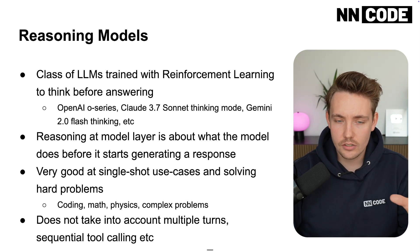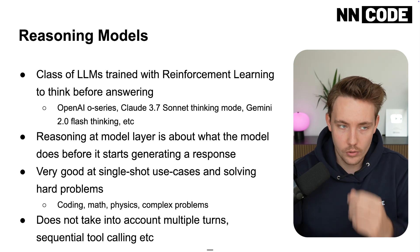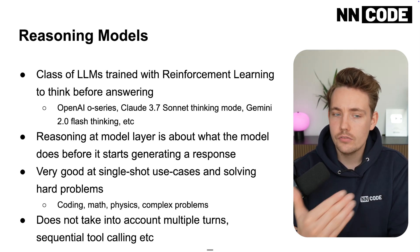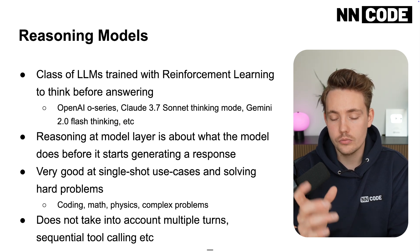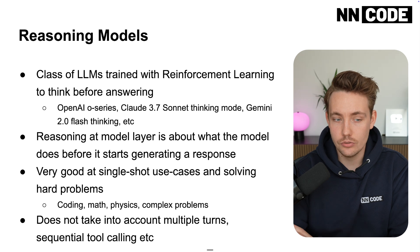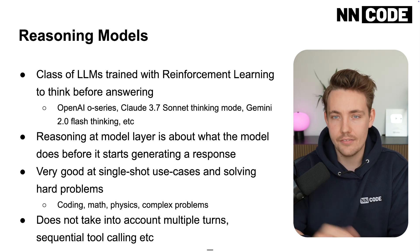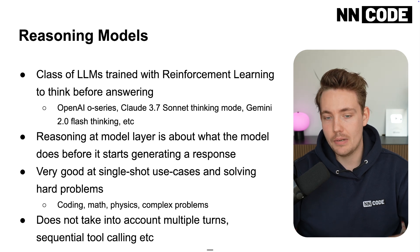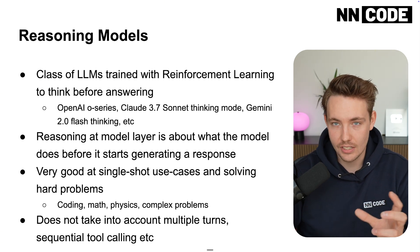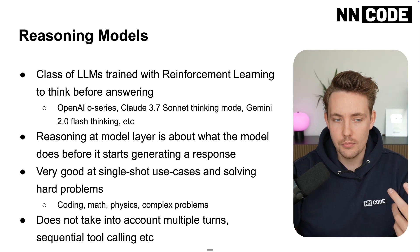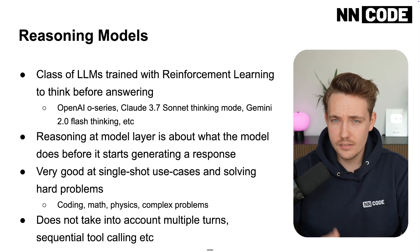There's a difference between a standard call and thinking mode. With thinking mode, we have reasoning at the model level. But not all models support chain of thought or thinking mode natively. So we can implement it on the agent level instead, dividing the task into multiple steps while still using a traditional LLM call. Reasoning at the model layer is about what the model does before it starts generating a response — basically just thinking, just as a human would. We think, solve the task, and then produce a response.